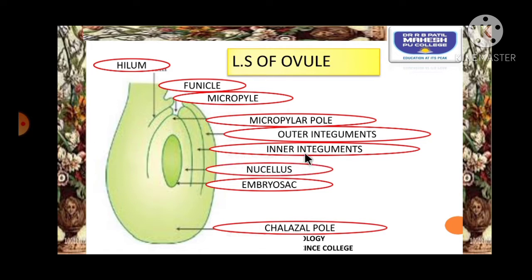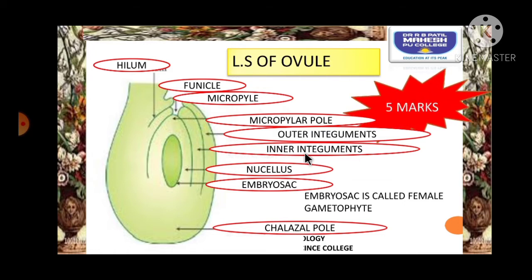This diagram, its labeling and explanation can be asked for 5 marks. Embryo sac is called as a female gametophyte.